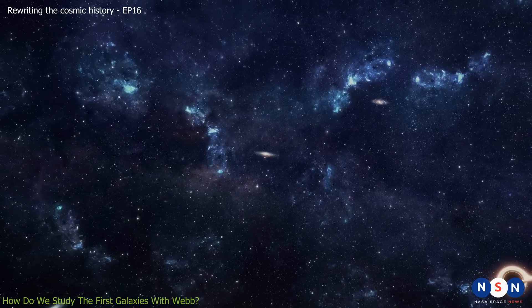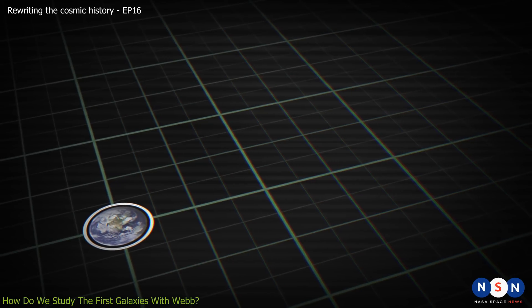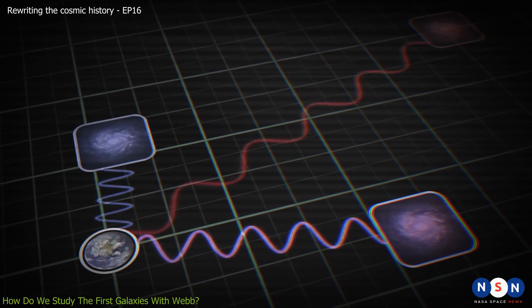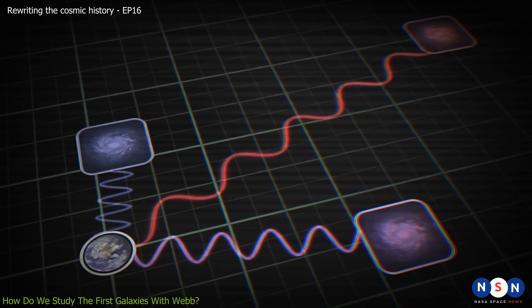The answer lies in a phenomenon called redshift. Redshift is the effect of the expanding universe on light waves. As light travels across space, it gets stretched by the expansion of space itself. This means that its wavelength increases, and its frequency decreases.